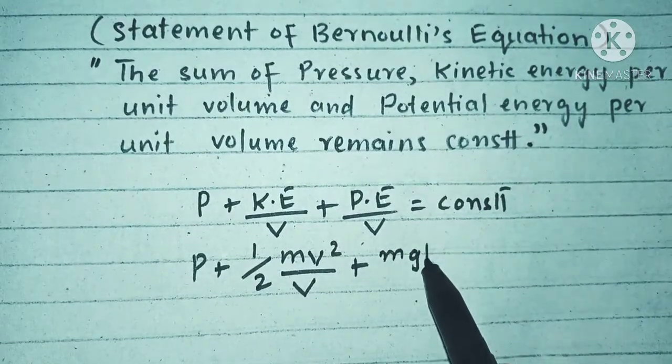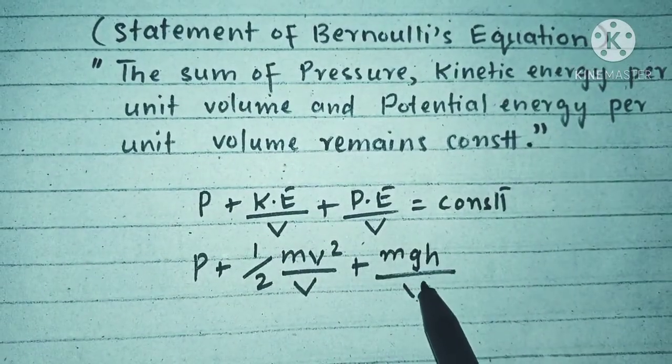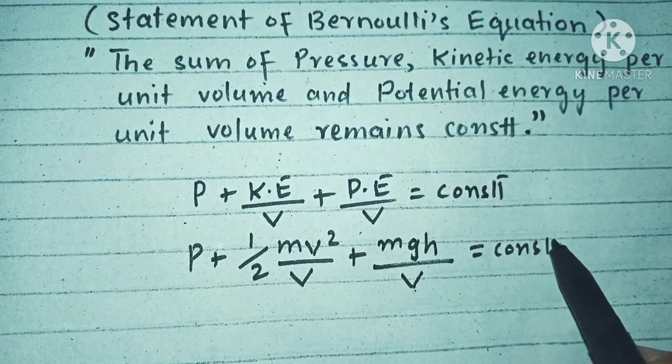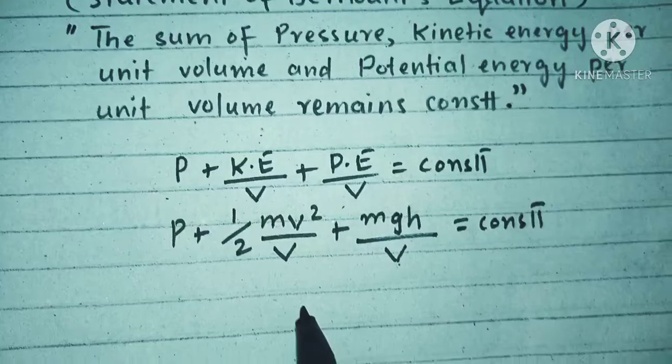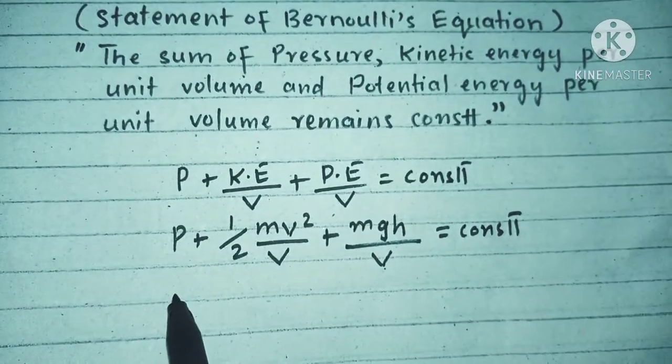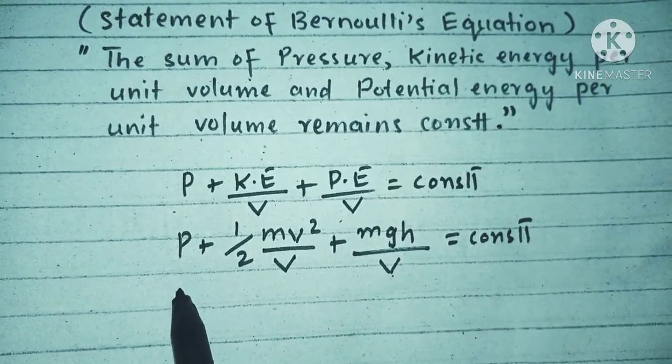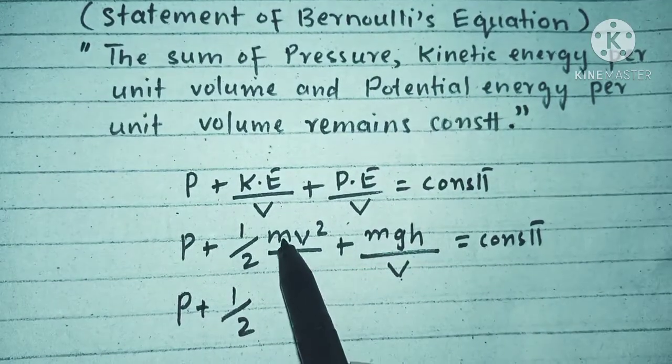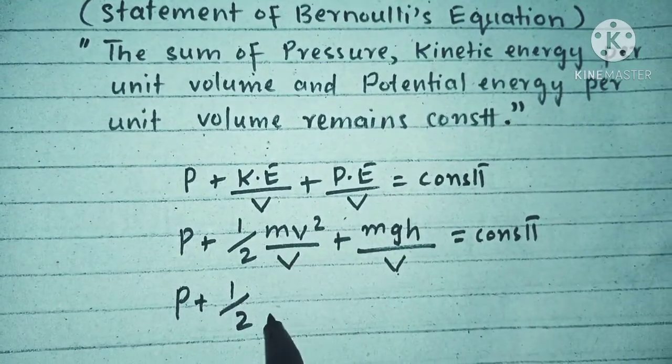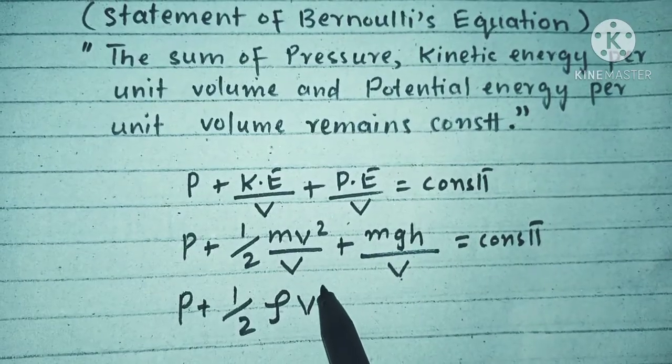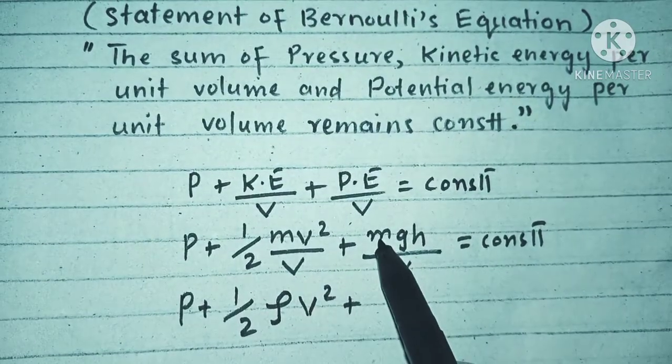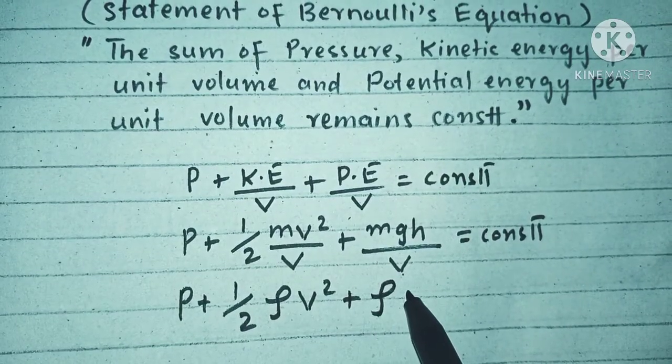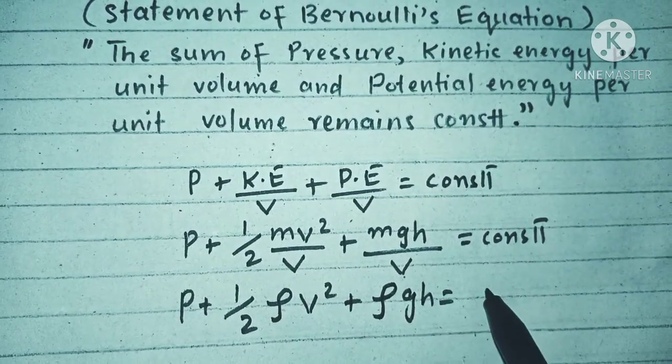So we write here mgh divided by V is equal to constant. So can we write here as pressure P plus half, as we know that mass per unit volume is equal to density, so we write here rho and V squared plus mass per unit volume again is equal to rho (density) and gh is equal to constant.